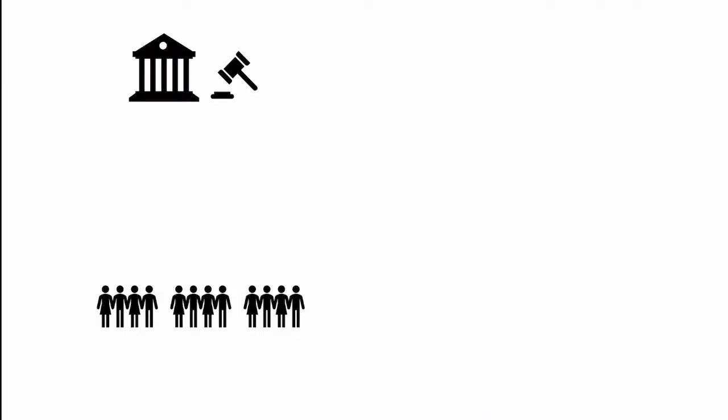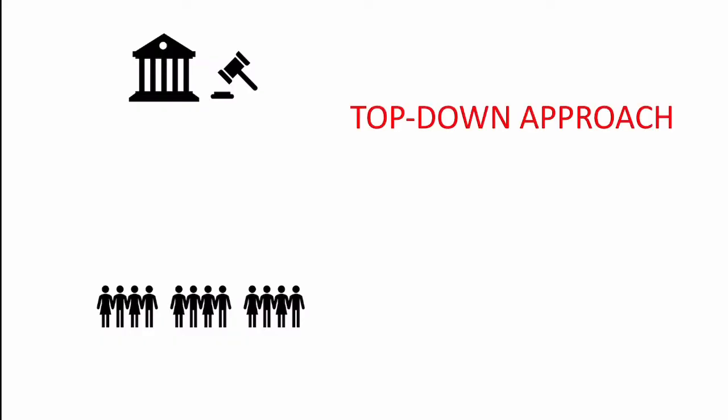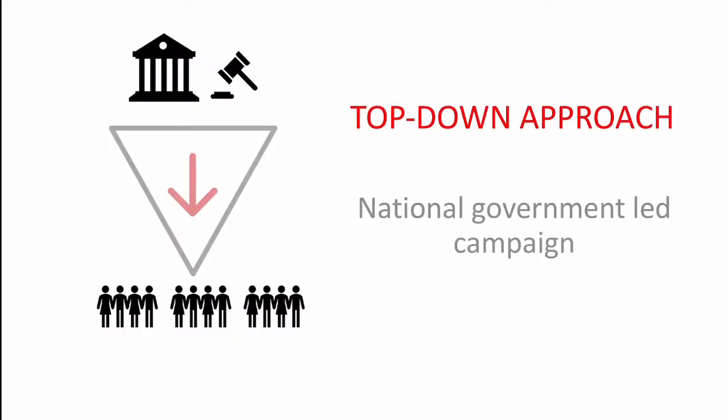The first thing we need to know is that when we talk about a national level, this is what we call a top-down approach. This means that it's a campaign that's led at government level, and then that information and those decisions filter down to the population, but the decisions are made at the government level.